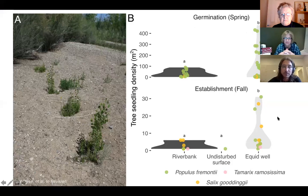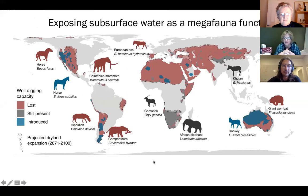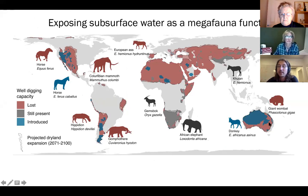What we propose is that exposing subsurface water is actually a function that was once ubiquitous by now extinct animals. A wombat was documented not too long ago digging a well of four meters depth in Australia. Giant wombats very likely could have dug wells even deeper in central Australia, which suggests that donkeys and horses may be restoring features quite similar to things that were once present.